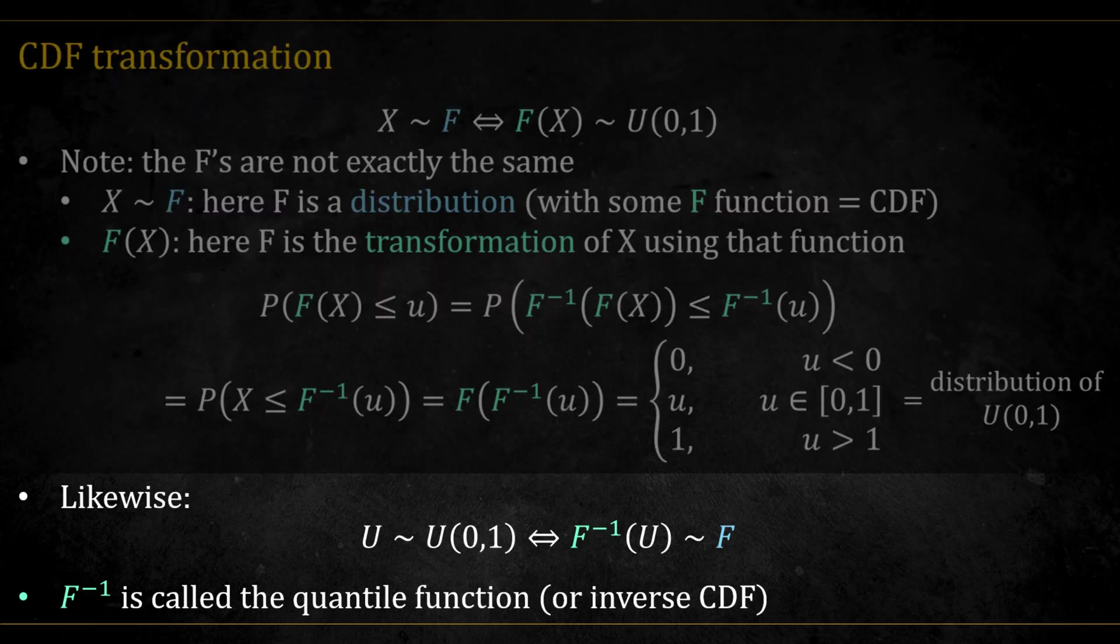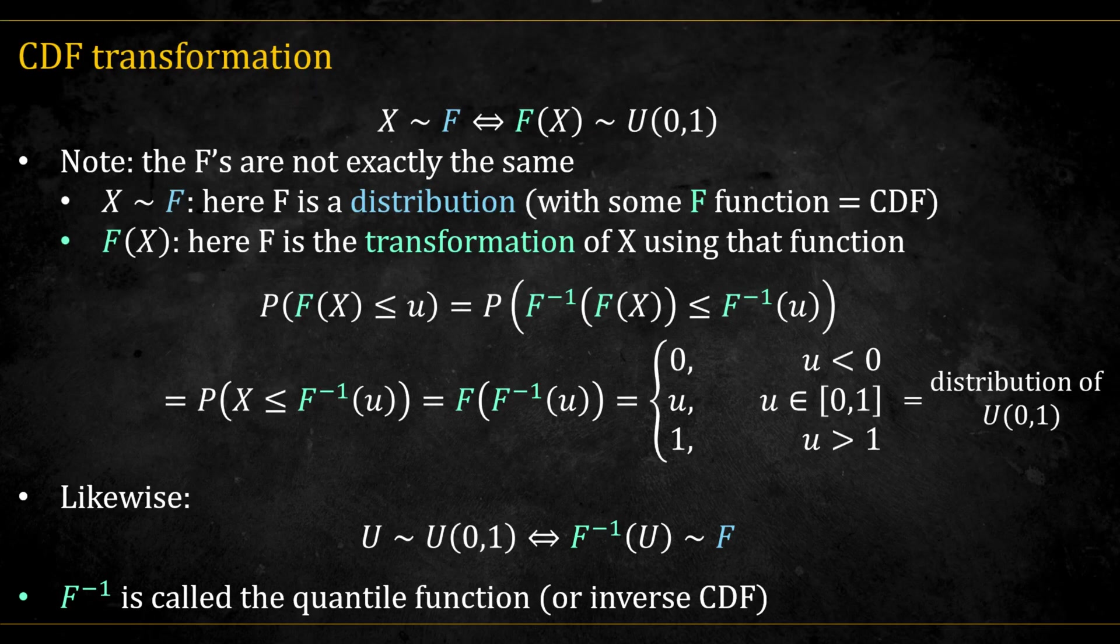And it works in the other direction too. If we start with a standard uniform variable and apply the quantile function F inverse, the result follows the original distribution f. That's the fundamental idea of transforming arbitrary distributions to the uniform distribution that copulas are built on.